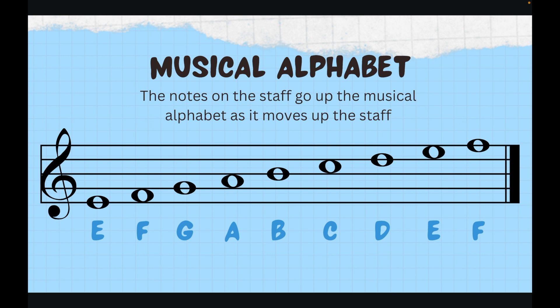If we start with E, we have E, F, G, A, B, C, D, E, F. And if we were to keep going it would go to G, A, B, and so on and so forth. As you can see, not only do we have our lines, every good burger deserves fries, but we have our spaces: F, A, C, E, which spells face.